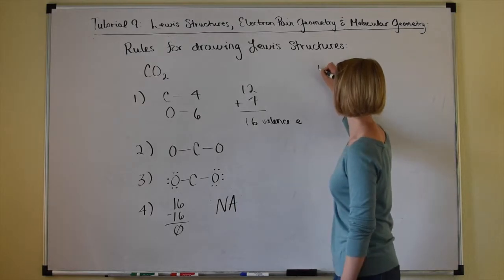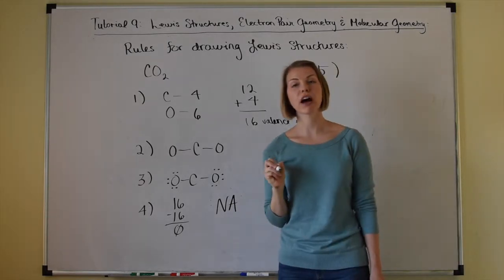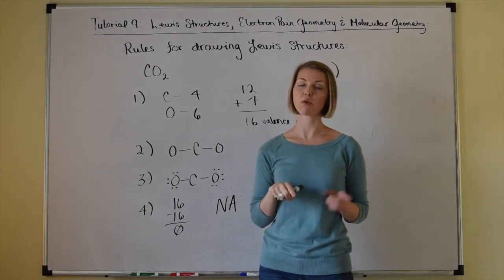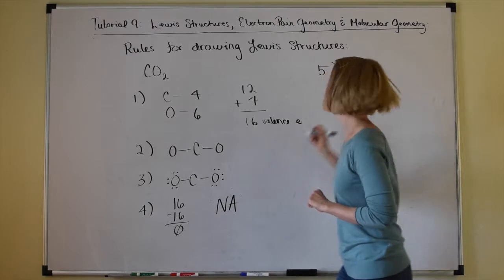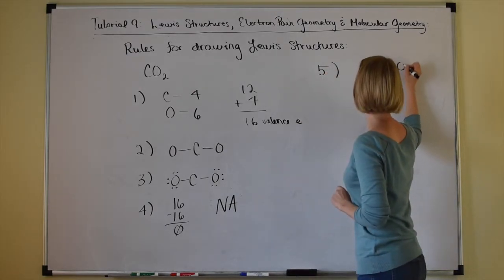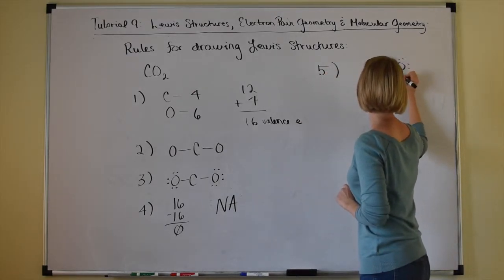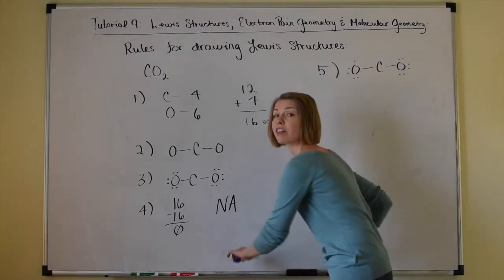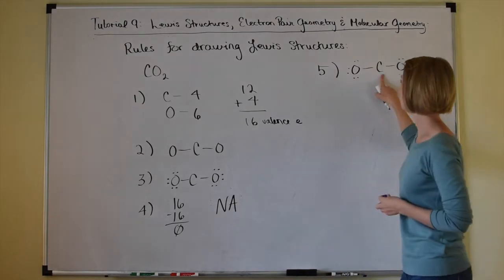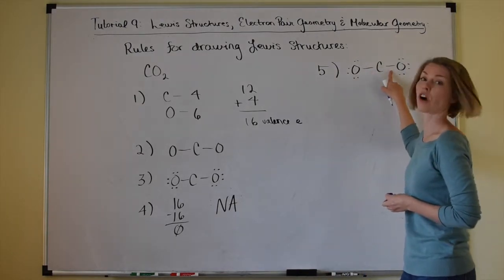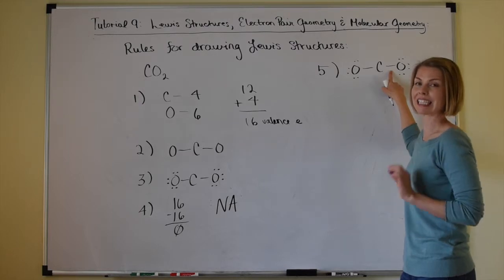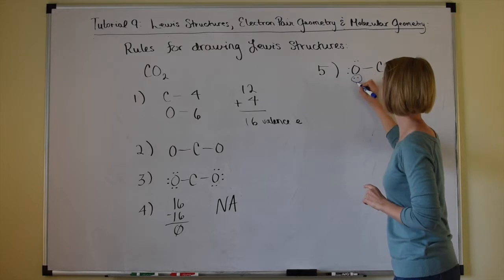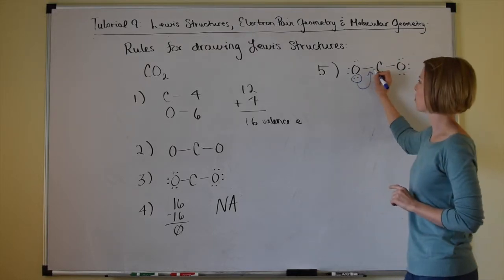We skip to rule number five: if the octet is still not satisfied on the central atom, form double or triple bonds as needed. Carbon right now only has four electrons — it does not have octet. We're going to pull in electrons and share in a double bond. Still not satisfied after one double bond, so we pull in from the other side as well, giving two, four, six, eight — completing the octet.